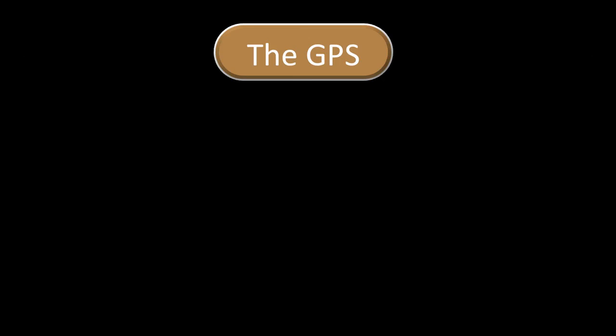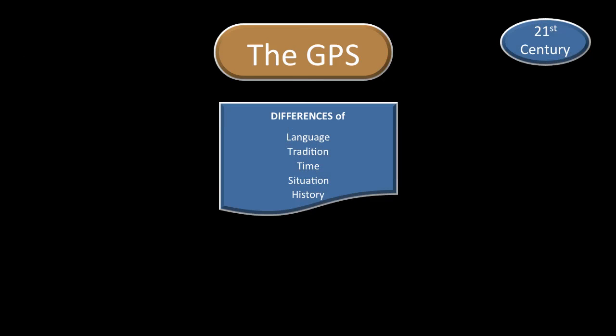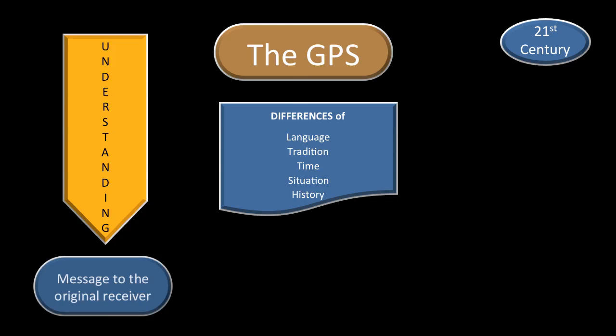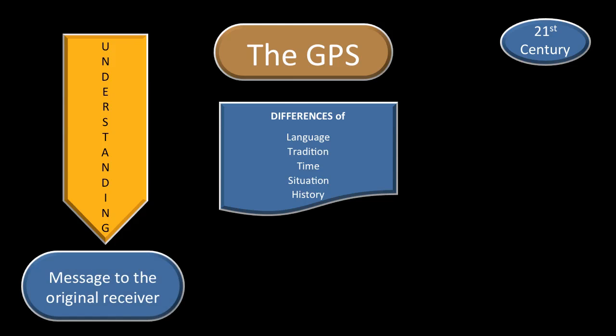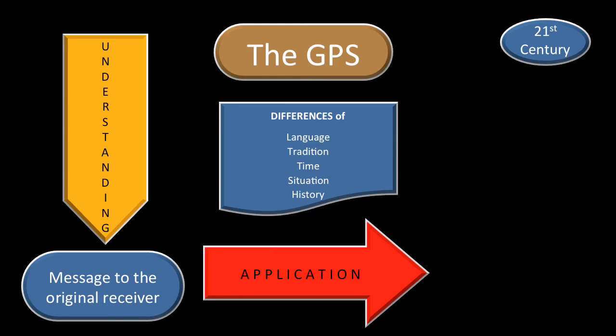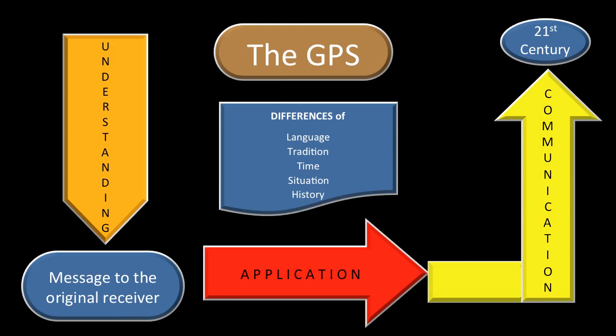In the GPS method, we've seen that we live in the 21st century and there are many differences between us and the people of the Bible — differences of language, time, and history. We need to overcome those differences, and the GPS method teaches us that we go through three major steps. The first one is understanding, which takes us to the message to the original receiver. We ask: is that message applicable or not? And if it is applicable, we communicate it in the 21st century.